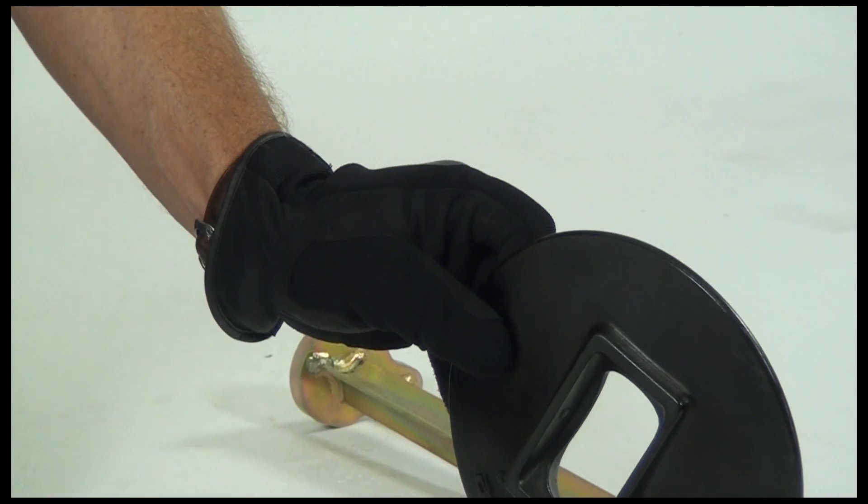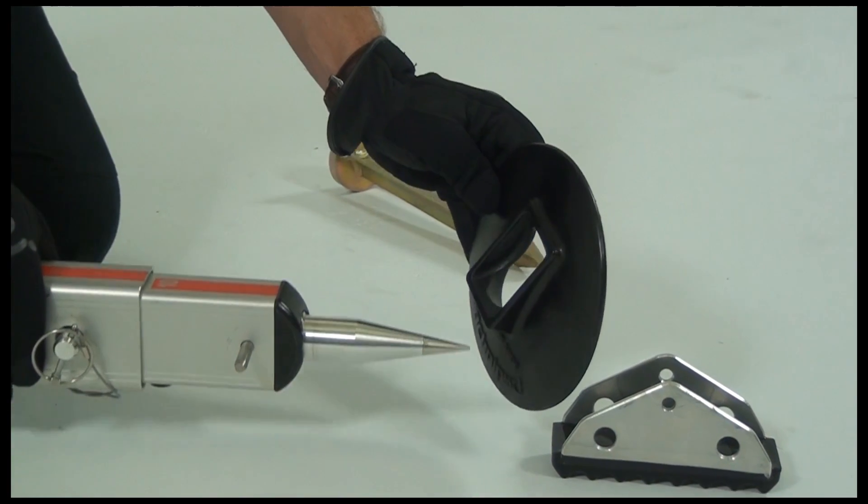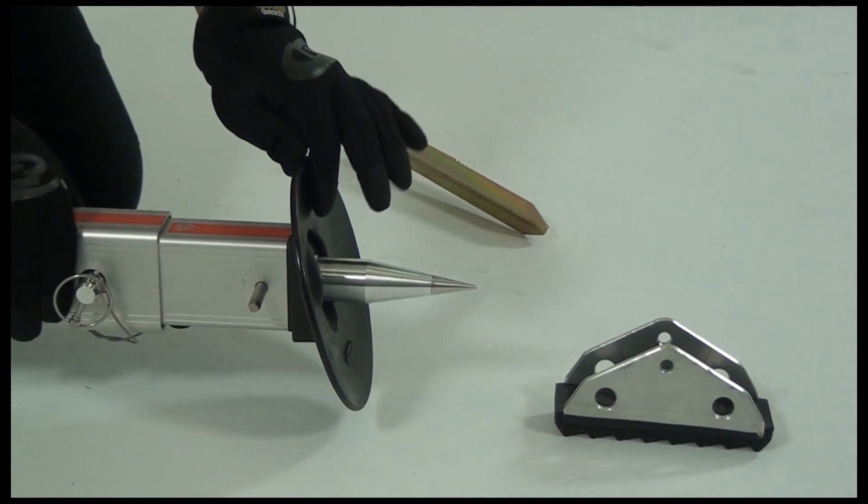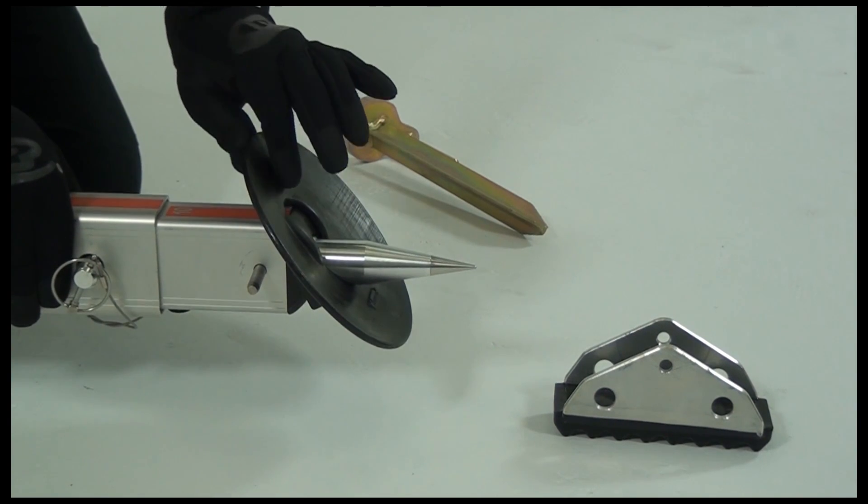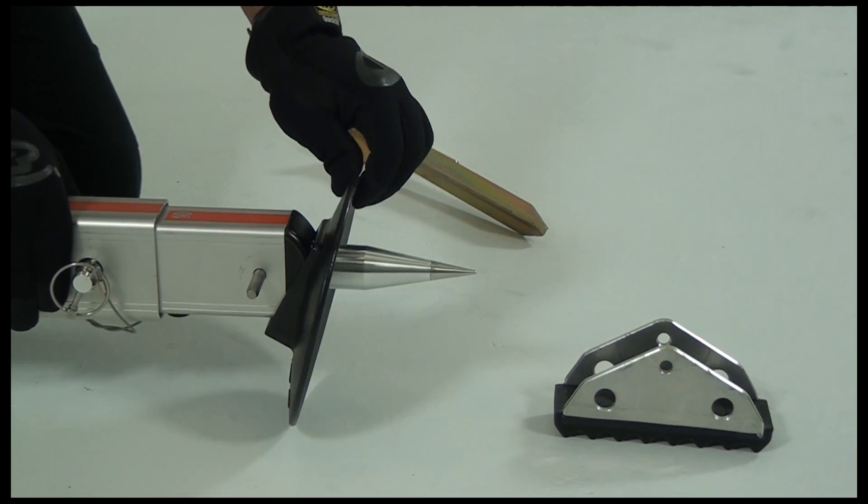A soft ground shoe is also available and this is used in conjunction with the spike foot. The soft ground shoe clips over the spike foot allowing the spike to dig into the surface such as sand while preventing the leg from sinking further.